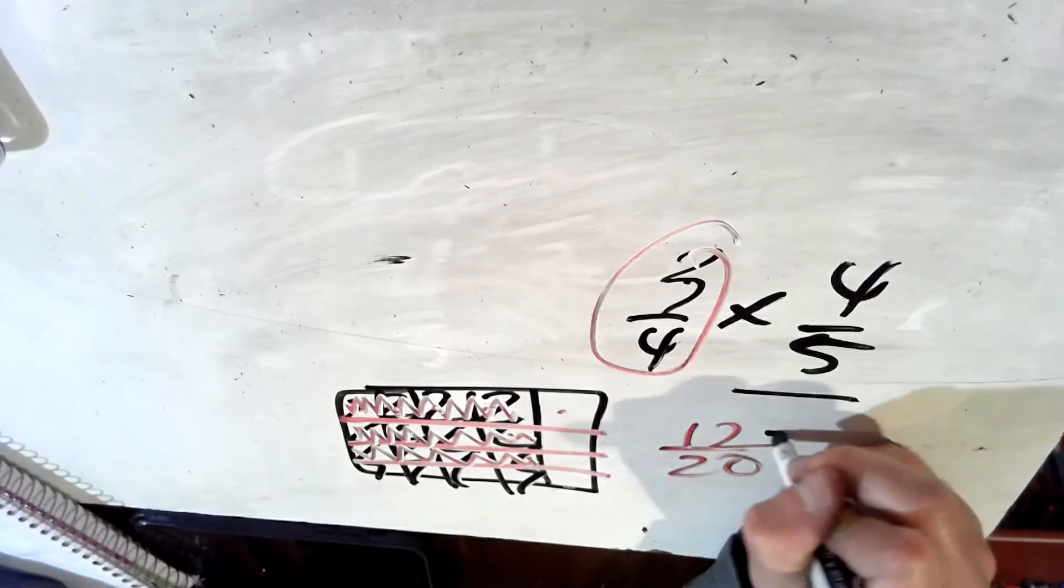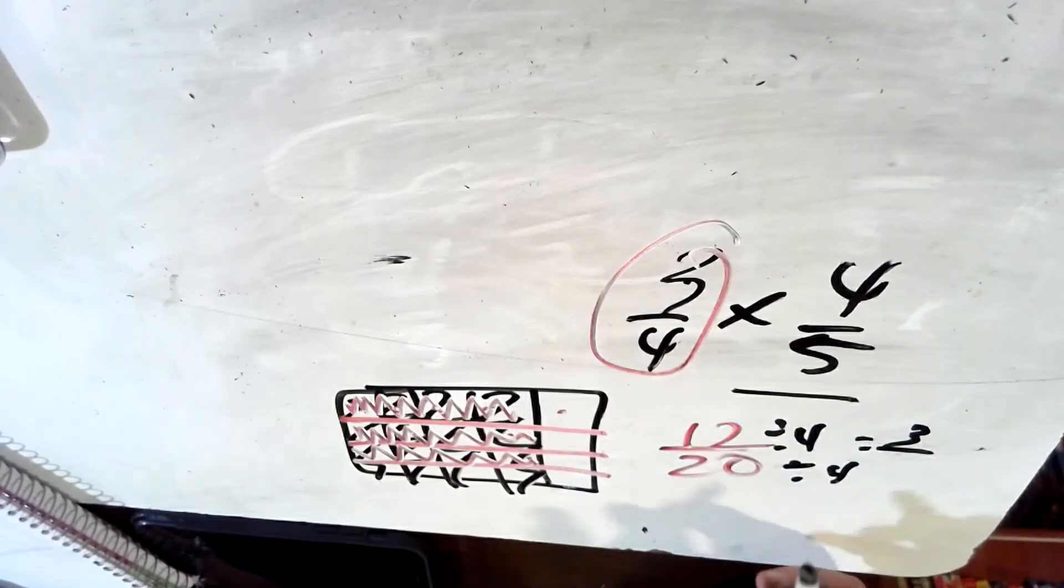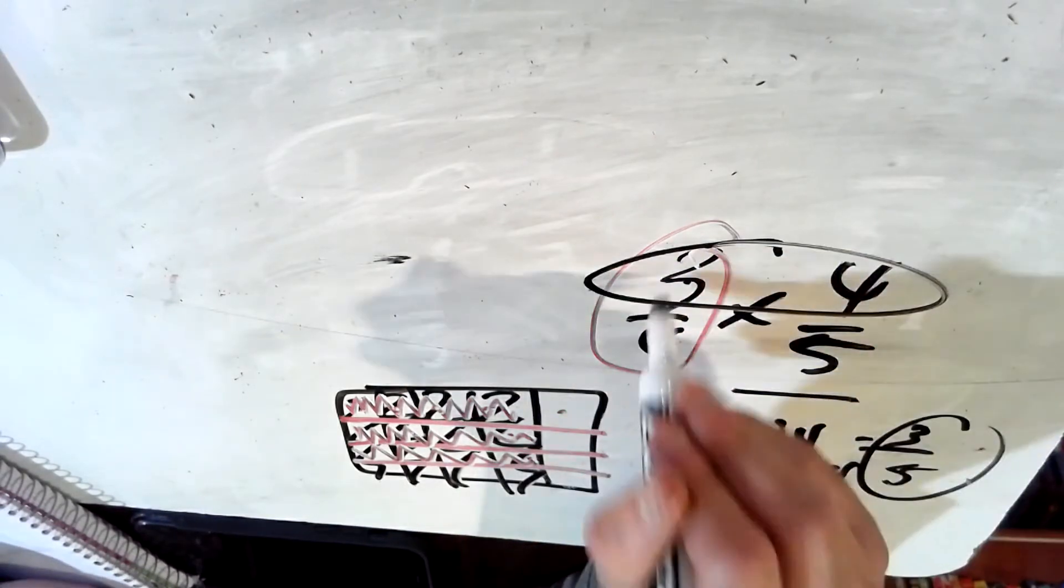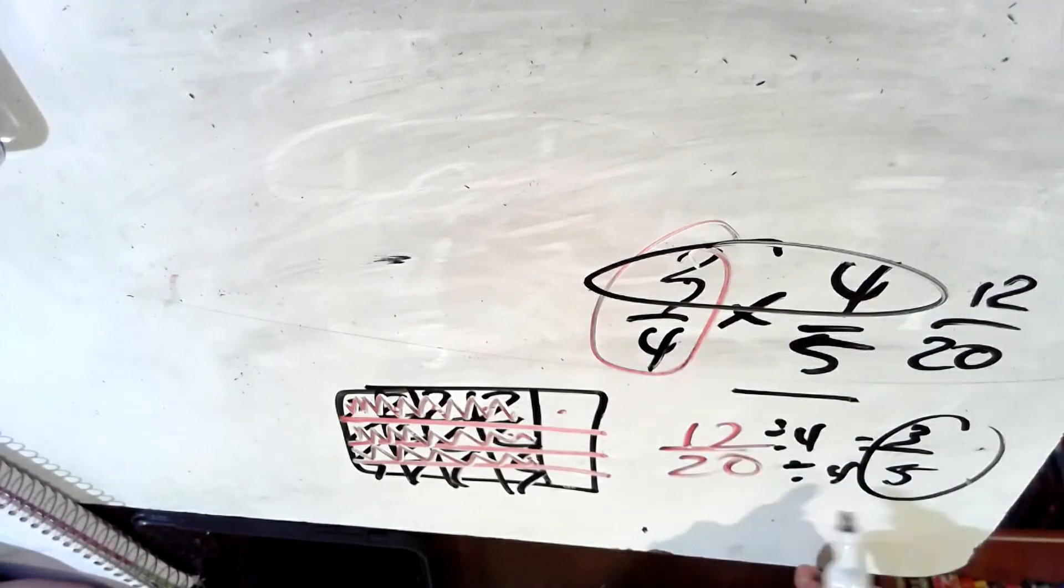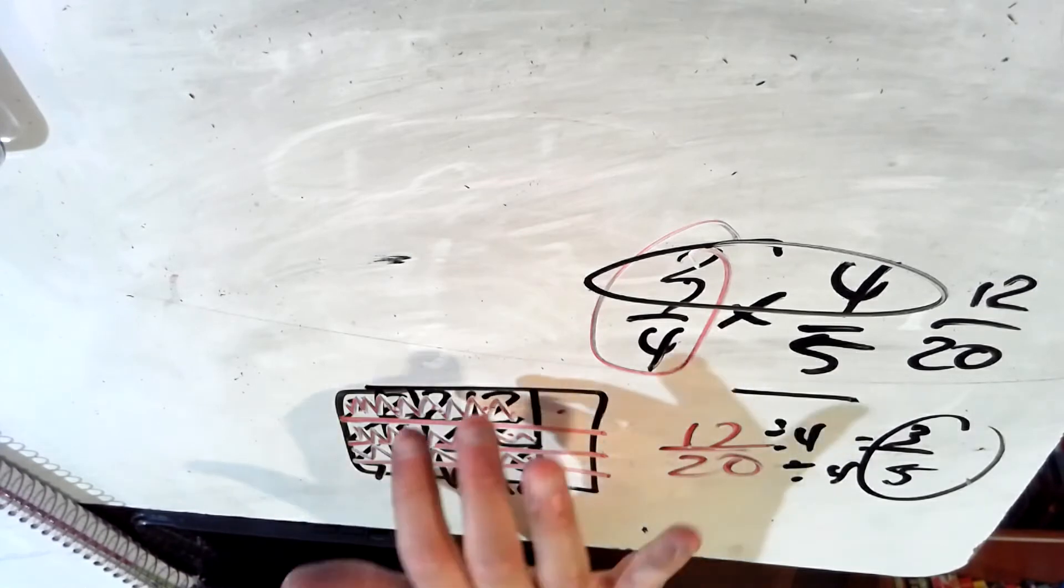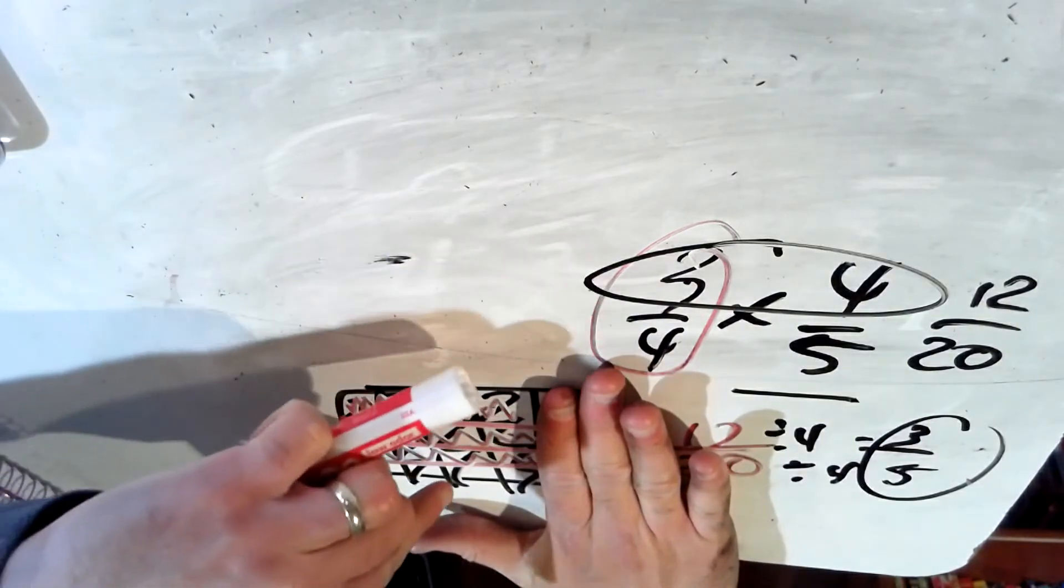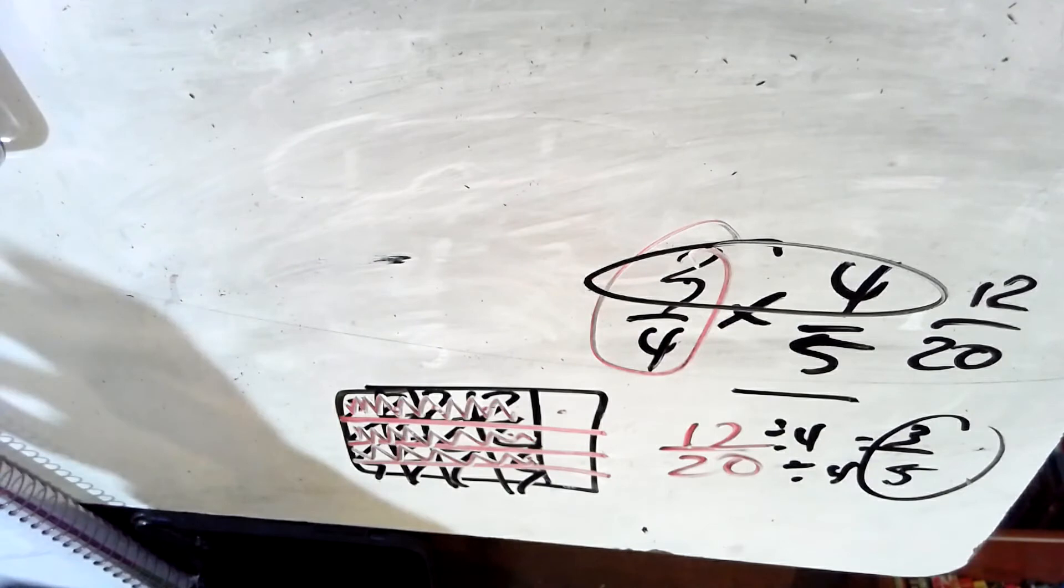So three fourths of four fifths is 12 twentieths, which if you simplify that, if you simplify 12 twentieths, you can divide them both by four. 12 divided by four is three. 20 divided by four is five. Three fourths of four fifths is three fifths. It got smaller. You could also multiply across. Three times four is 12. Four times five is 20. But we had four fifths of the land. Three fourths of that four fifths is this amount right here, which is 12 out of 20 altogether.